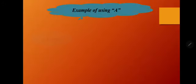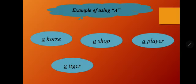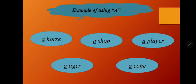Examples of using A: a horse, a shop, a player, a tiger, a corn. Check the first letter of each noun — H makes the 'h' sound, S makes the 's' sound, P makes the 'p' sound, T makes the 't' sound, K makes the 'k' sound. All of these start with consonant sounds, so we write 'A' before them.